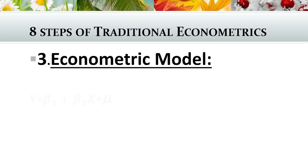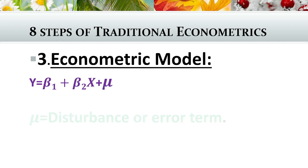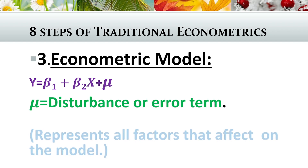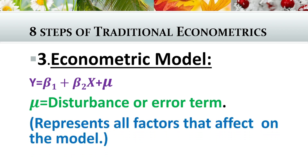This slope coefficient is also called the marginal propensity to consume of the consumption function. The third step is the econometric model. In the econometric model, a disturbance term is added, which is absent in the mathematical model. This disturbance or error term represents all factors that affect the model.